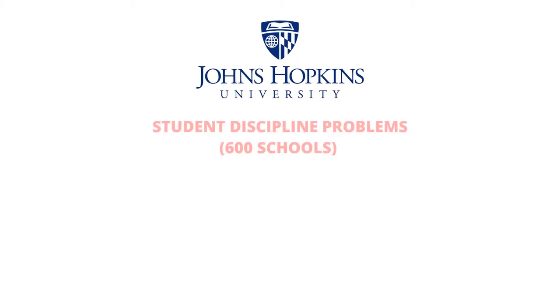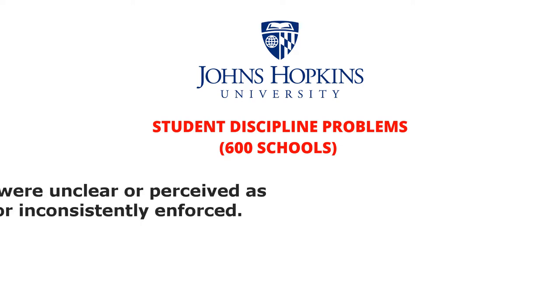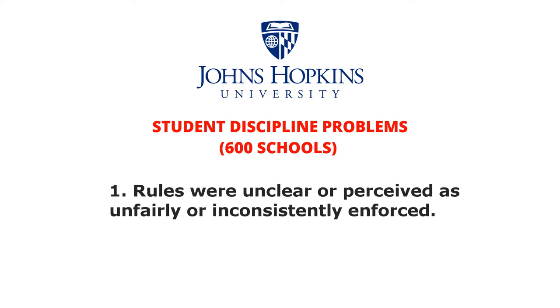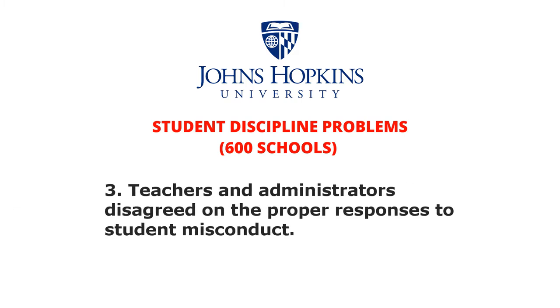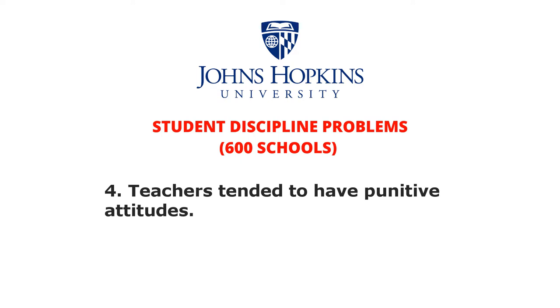Although the establishment of rules is motivated by good intentions, their implementation often produces deleterious effects. When Johns Hopkins University researchers analyzed data for more than 600 schools, they found seven characteristics associated with student discipline problems, and four of them concerned rules: rules were unclear or perceived as unfairly or inconsistently enforced; students didn't believe in the rules; teachers and administrators disagreed on the proper responses to student misconduct; and teachers tended to have punitive attitudes — often the result of an enforcement mindset of relying on rules.